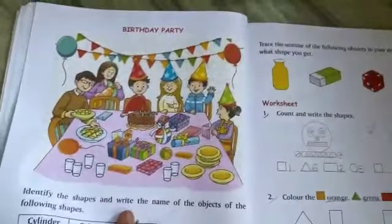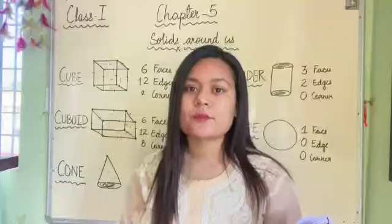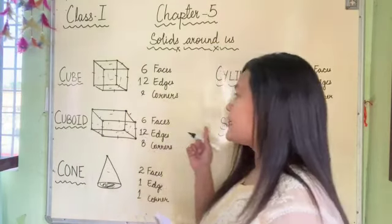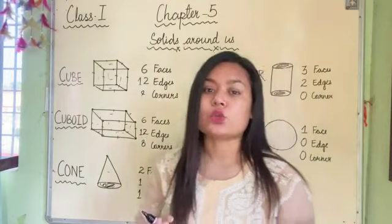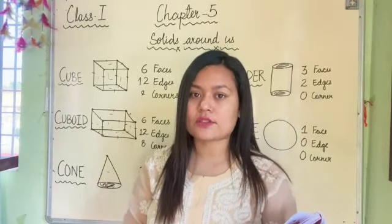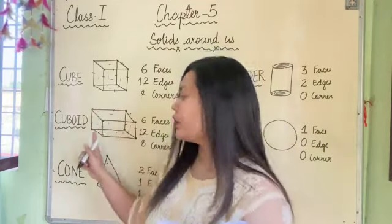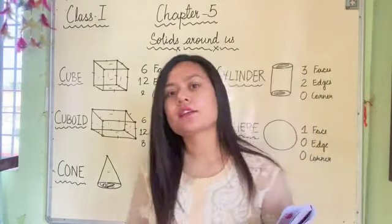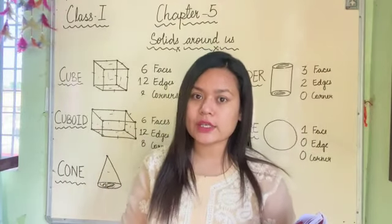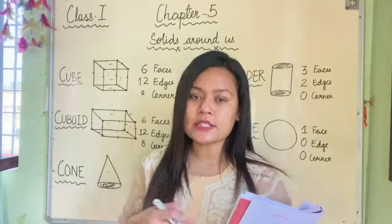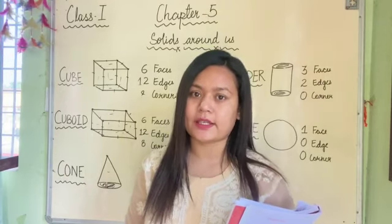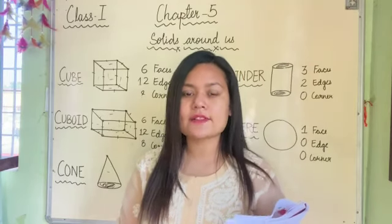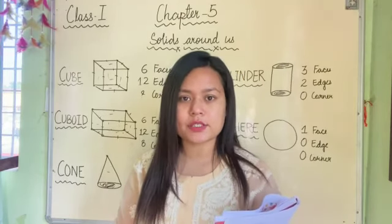This is your homework. You have to collect objects that look like these solid shapes. Search something in your house that looks like cube, cuboid, cone, cylinder and sphere. Click a picture and then send it to me through your email ID. Thank you, children. That's all for today. See you in our next video. Till then, take care of yourself. Stay home, stay safe and keep learning, children. Bye-bye.